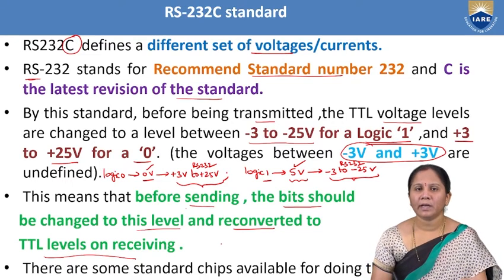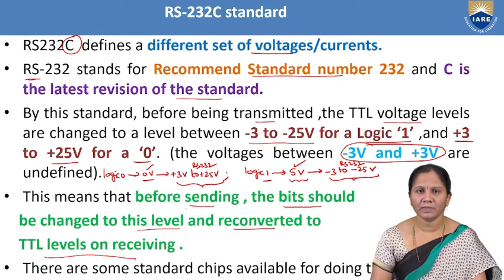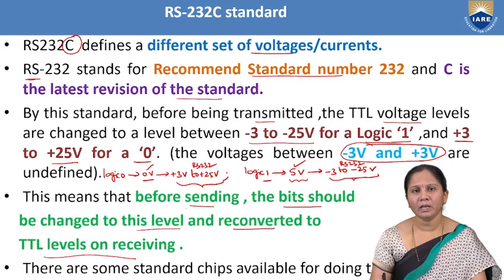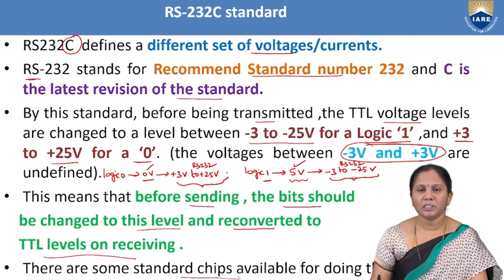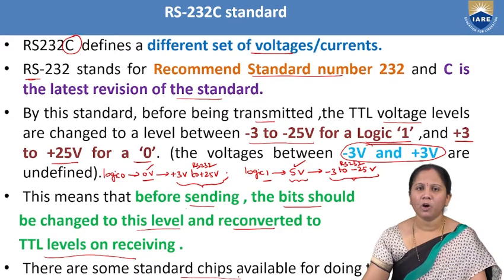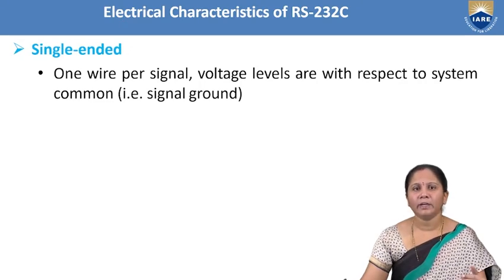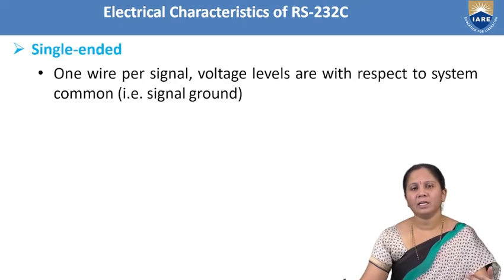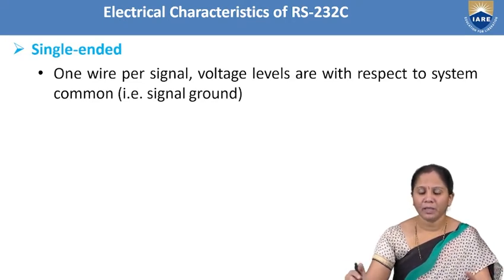To perform TTL to RS-232 and RS-232 to TTL voltage level conversion, we have standard chips. The standard chips that perform this operation are the 1488 and 1489 ICs. One IC is called the line driver and the other is called the line receiver.